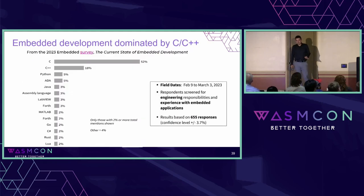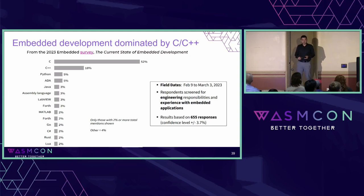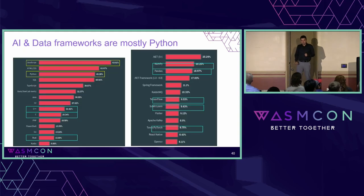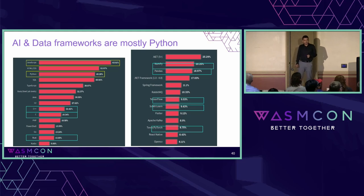Embedded development is really dominated by C and C++, which shouldn't be surprising — these are the systems programming languages. But the problem is that nowadays a lot of the AI and data frameworks are mostly Python. So we have Python developers who don't necessarily want to delve into the C and C++ world to do what they need to do. We have this impedance mismatch.